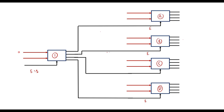Let me assume the input for this first decoder is I3 and I2. If I3 and I2 are both 0, then the first output line will be high and the rest will be 0. This line is connected to the enable of decoder A, so E equals 1 here, meaning decoder A will be active and all other decoders will be inactive.